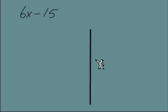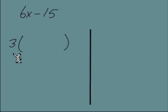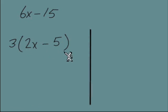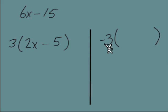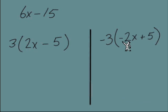Let's look at this one more time with a different example: 6x minus 15. The greatest common factor here is 3, so we put 3 in front of parentheses and inside we have 2x minus 5. Now on the right side, let's see what happens when we factor out a negative 3 for the GCF. The terms we need inside the parentheses: negative 3 times negative 2x gives us positive 6x.